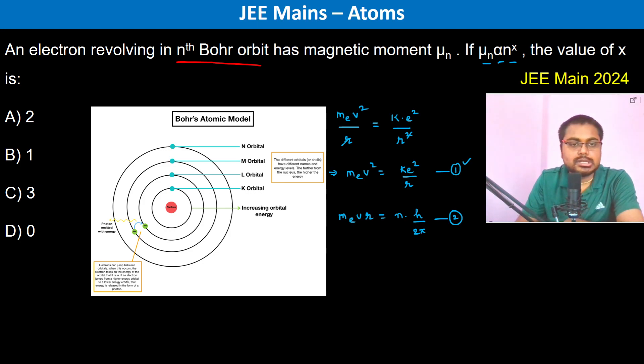Now let us go ahead. We have the magnetic moment has to be calculated. So what is magnetic moment? Magnetic moment is i into A, that is the current into the area of the orbit.